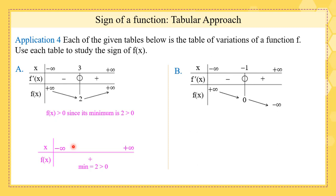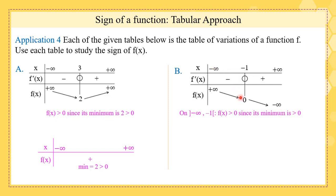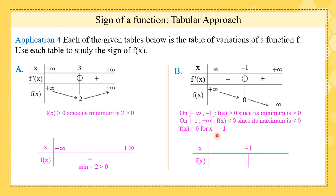In another table, we need to study the sign of f(x). On the interval (-∞, -1), f(x) is positive because its minimum is greater than 0. On the interval (-1, +∞), it is negative because it varies from 0 to -∞, so its maximum is less than 0. And when x equals exactly -1, f(x) equals 0. This can be expressed in a sign table: positive on (-∞, -1) and negative on (-1, +∞).